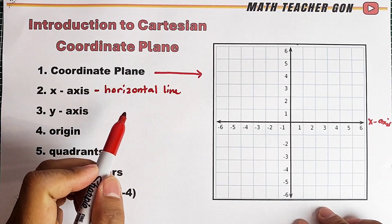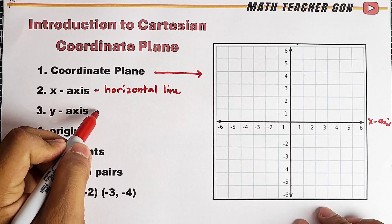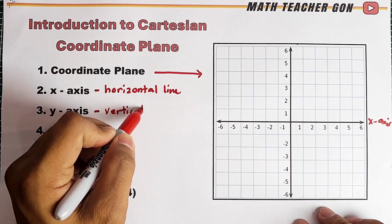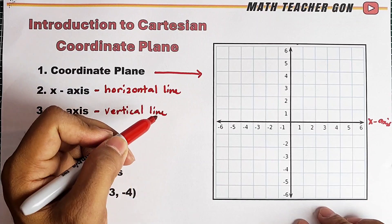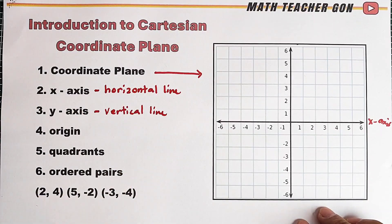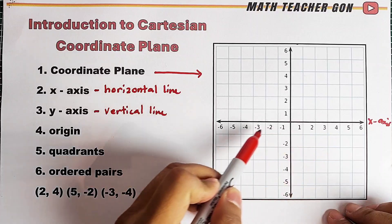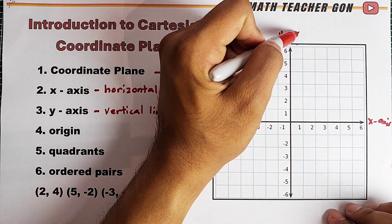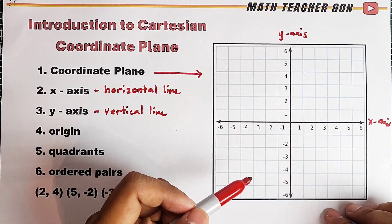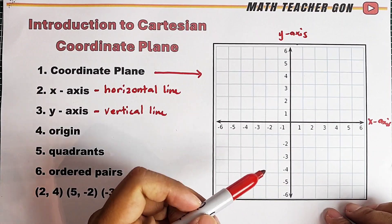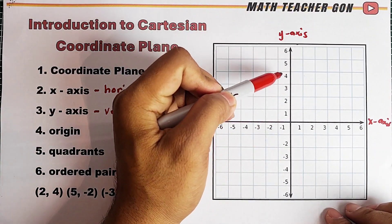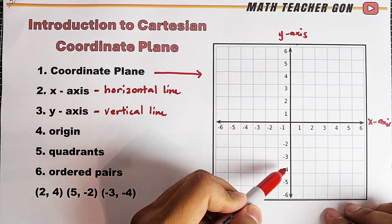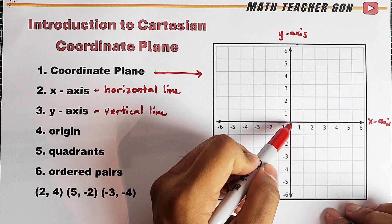If we have the horizontal line as the x-axis, we have the y-axis as the vertical line. As you can see, if this is your x-axis, this will be your y-axis — same structure, but only vertical. We have the positive numbers at the upper part of the y-axis and the negative numbers at the lower part, and at the middle we have zero.